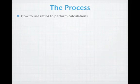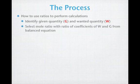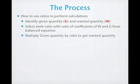The process is going to be very straightforward. For these calculations, it's going to be a one-step calculation using dimensional analysis. The first thing we need to do is identify the given quantity and the wanted quantity in the problem — it'll be a word problem, so it'll be very easy to see. Next, we're going to select the mole ratio with the ratio of coefficients of the wanted and the given from the balanced chemical equation. Finally, we're going to multiply the given quantity by that ratio to get the wanted quantity.